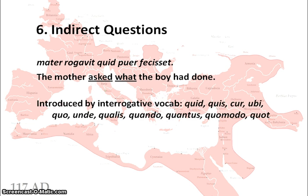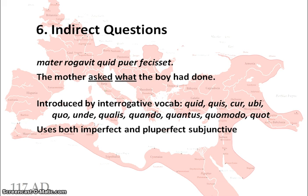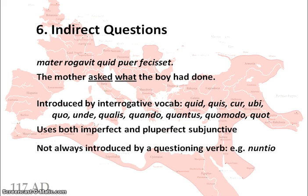An indirect question is introduced by interrogative vocabulary such as 'quid', 'quis', 'cur', 'ubi', etc. — all interrogative vocab you should know from direct questions. Like cum clauses, it uses both the imperfect and pluperfect subjunctive. It is not always introduced by an explicit questioning verb, which makes it slightly tricky. In our example we have 'rogavit' (asked), but it could also be 'nuntio' — so it could be 'the mother announced what the boy had done.' Although not explicitly a question in English, Latin still uses the indirect question construction.